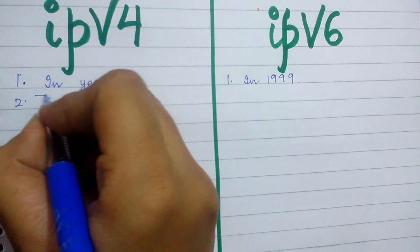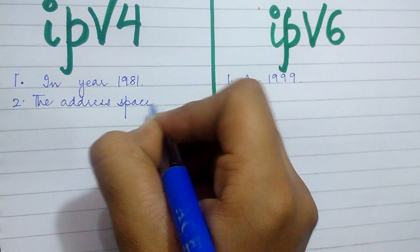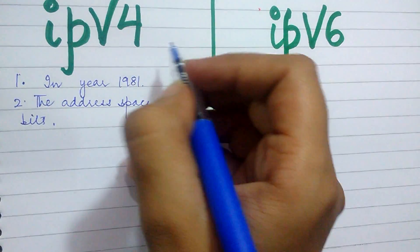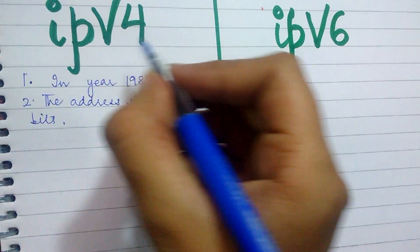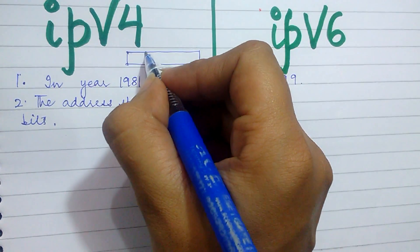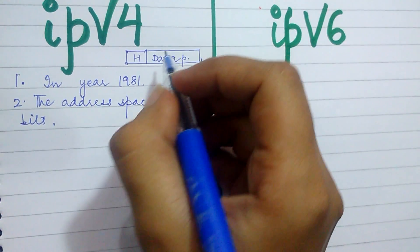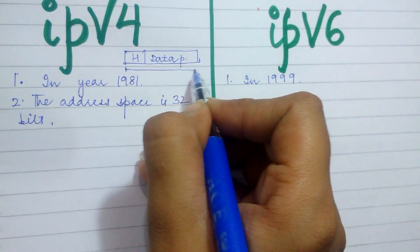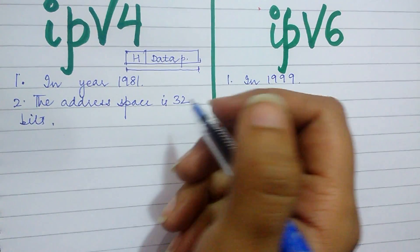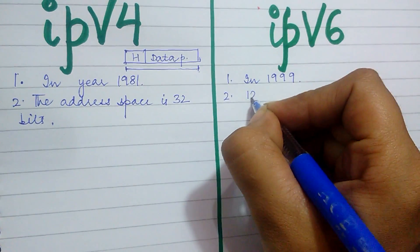The second point is that the address space is 32 bits in IPv4. The IP packet has two sections: one is the header section and the other is the data packet section. The address space is the whole of the space consumed by the IP packet, and that is 32 bits in IPv4, while in IPv6 the address space is 128 bits.